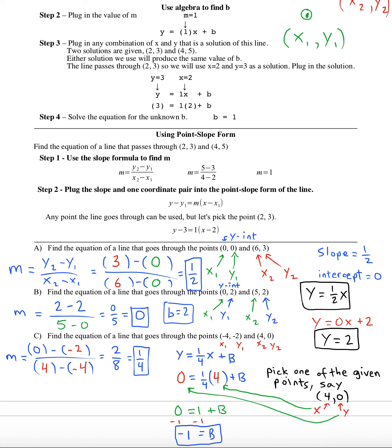Now that we know what b is and m, we can finally find the final answer: y equals one fourth x minus one.